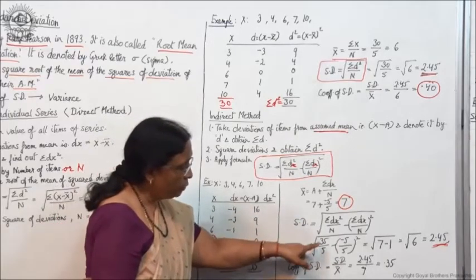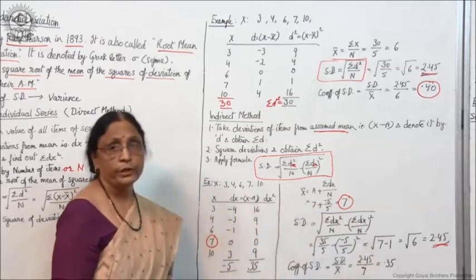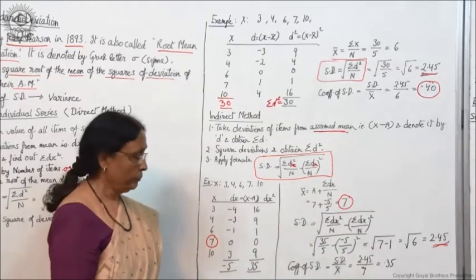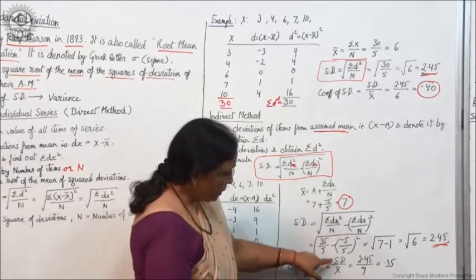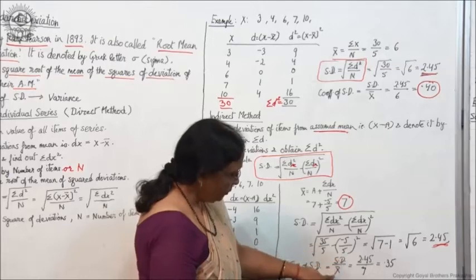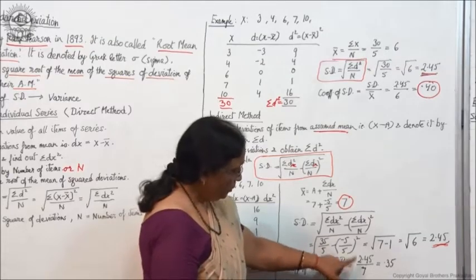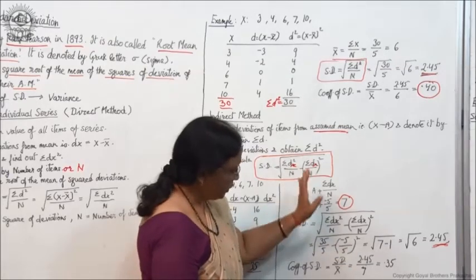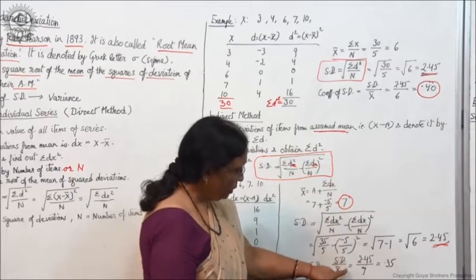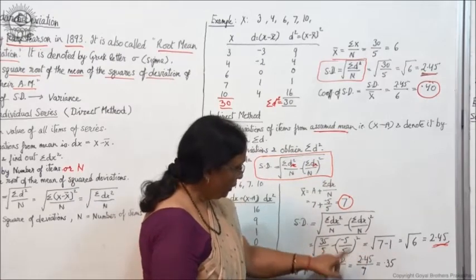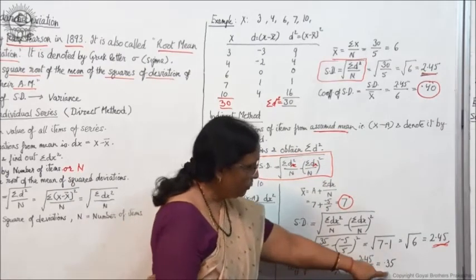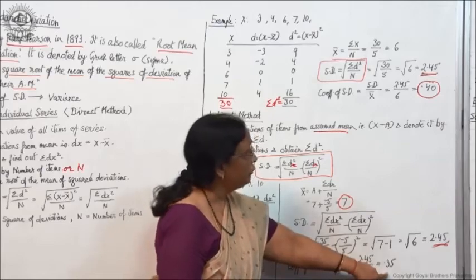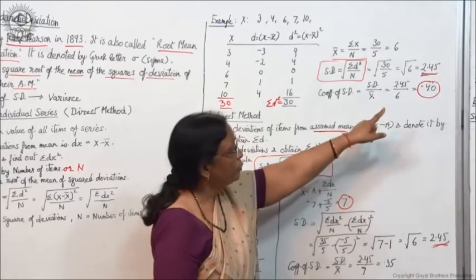The coefficient of standard deviation is standard deviation divided by the mean, because we are taking deviations from the mean. So 2.45 divided by the mean — in this case, we have taken 7 as the assumed mean — gives 0.35, or approximately 0.4.